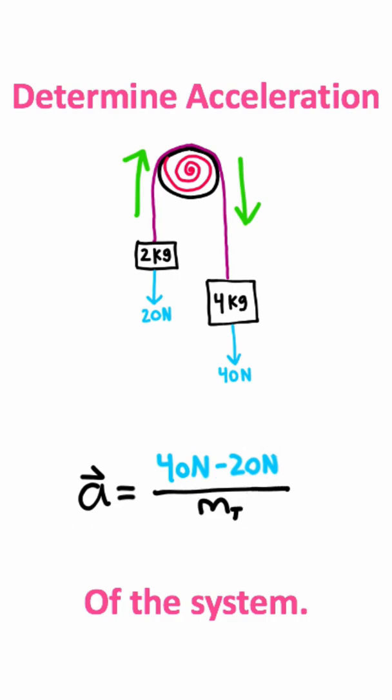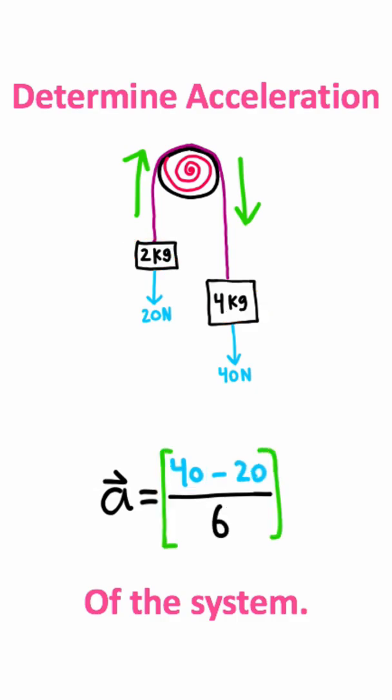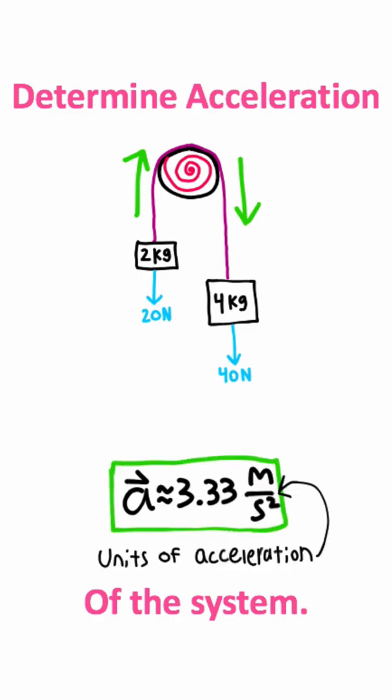Now, for total mass, all we need to do is take this 2kg and this 4kg block and add them together, and that's going to give us 6kg. So, this is the fraction we should end up with, and if we solve this fraction, we should get approximately 3.33 meters per second squared.